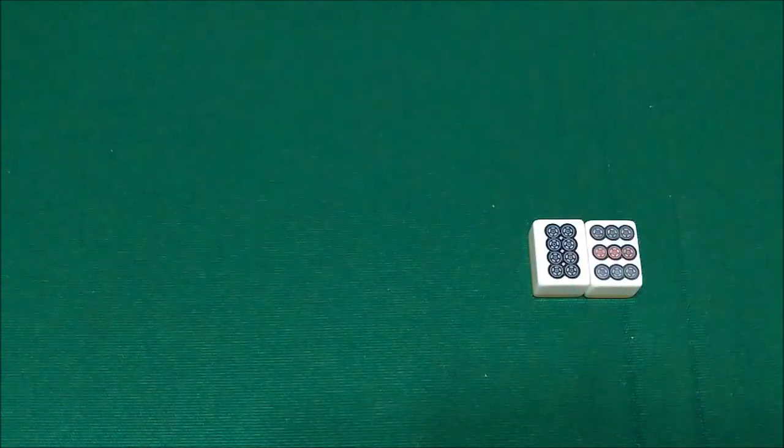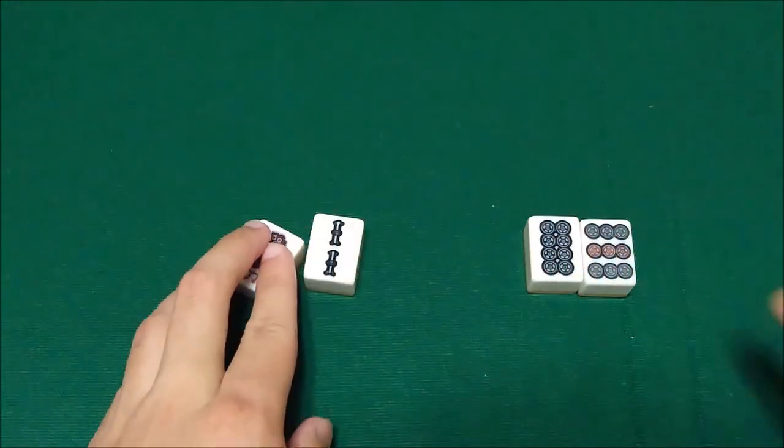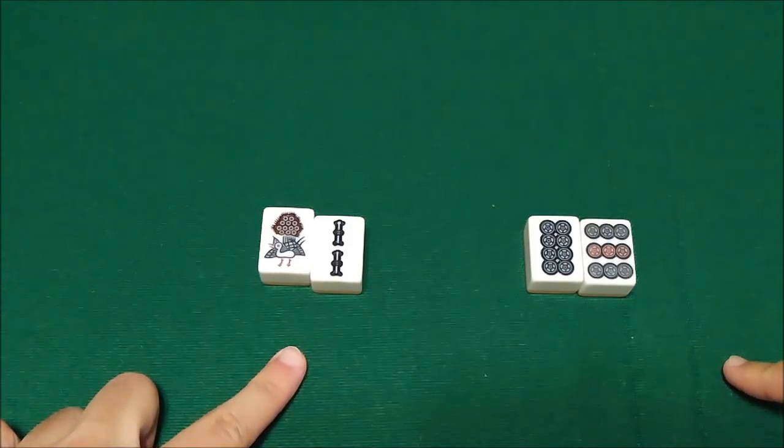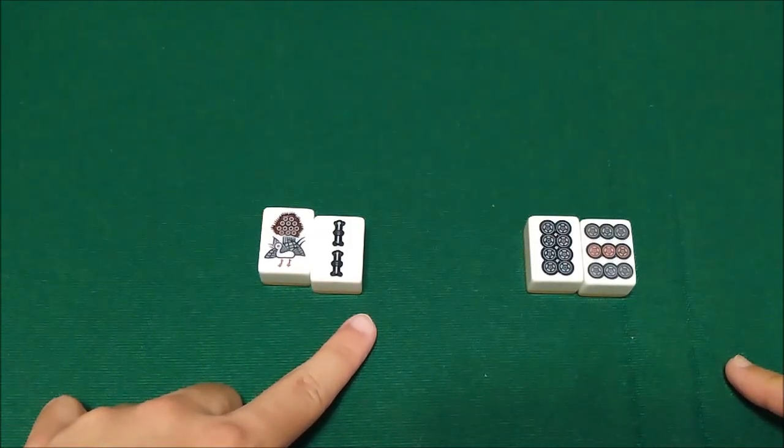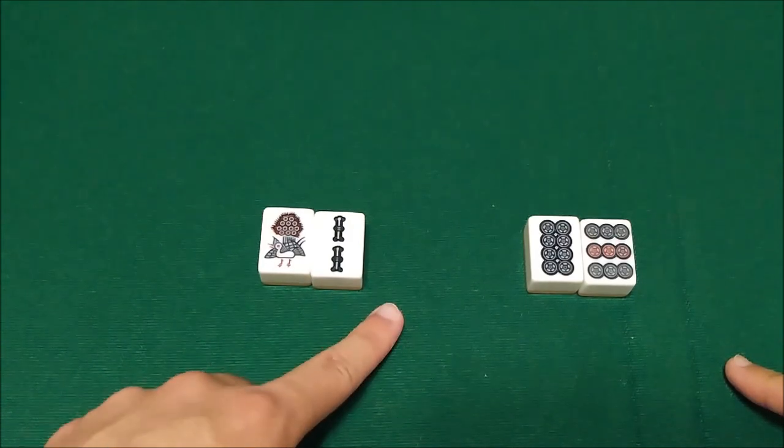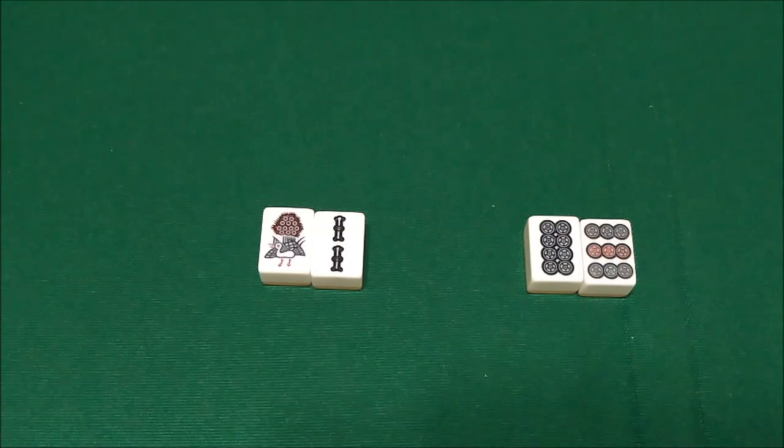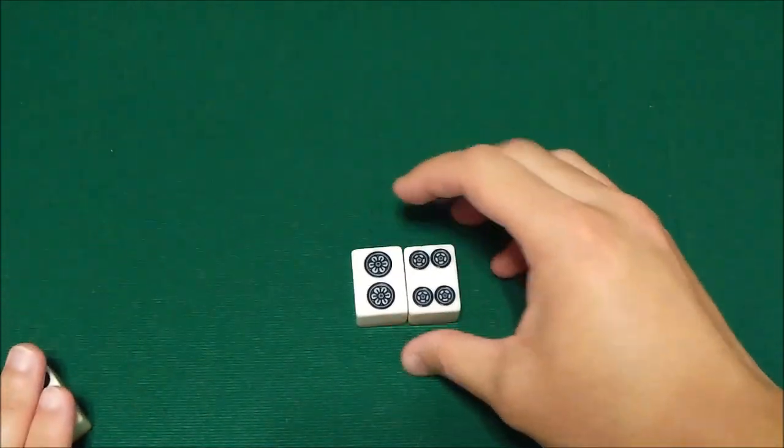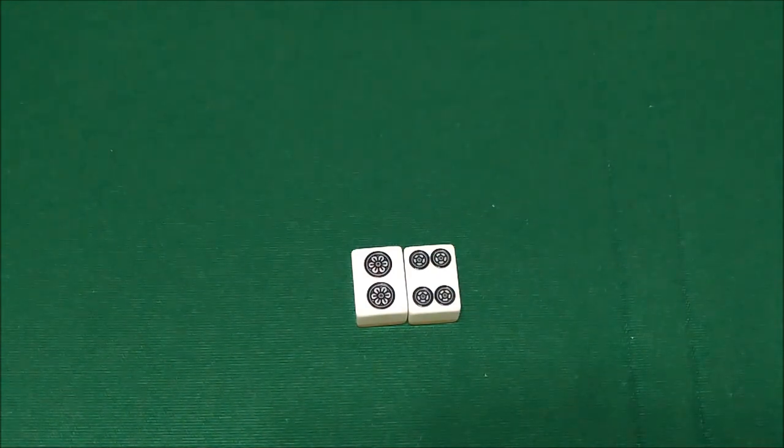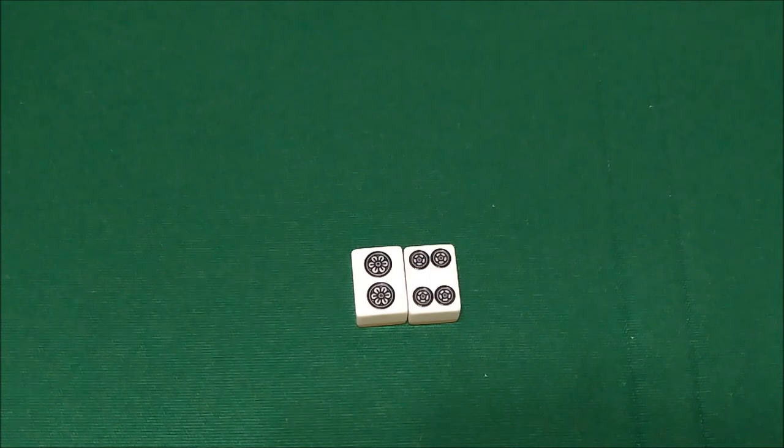The next thing we're going to consider is the wait that you were on when you were in Tenpai. Certain waits are worth Fu, and certain waits are not. The first one is a Penchan. This is the pattern that we've gone over before, where you either have a 1-2 or an 8-9, and you're waiting on that only one tile to complete the sequence. If you're just waiting on that one tile for a Penchan, that is worth 2 Fu. Another wait pattern that is also worth 2 Fu is a Kanchan. If you're just waiting on that one middle tile to win the hand, that is worth 2 Fu.